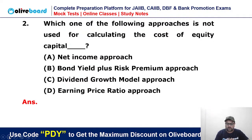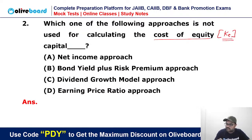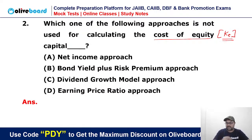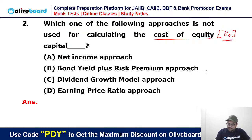Next: which one of the following approaches is NOT used for calculating the cost of equity? Cost of equity is called Ke. Which method among these is not used to calculate Ke? Question number two: net income approach, bond yield plus risk premium approach, dividend growth approach, and earning price ratio approach — among these, which is not used?